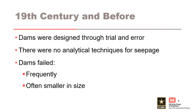In the 19th century and before, many dams were designed and constructed as part of irrigation systems. However, because the science for embankment dam design was not really developed — largely due to the absence of soil mechanics — dams failed frequently. Empiricism governed dam designs and as a result, dams were often greatly overbuilt.